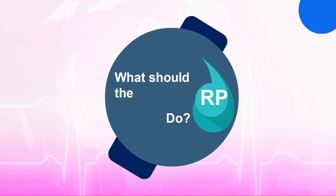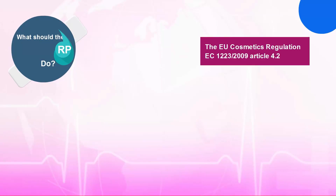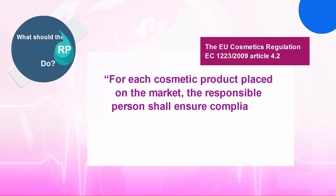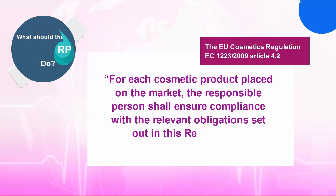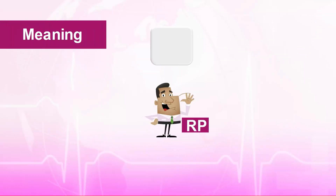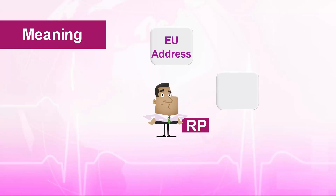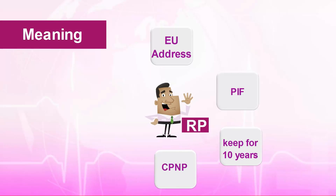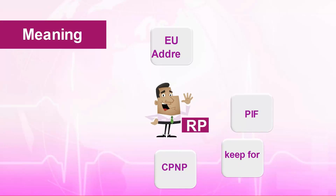What should the RP do? The EU Cosmetics Regulation, EC Article 4.2 states that for each cosmetic product placed on the market, the responsible person shall ensure compliance with the relevant obligations. This means: (1) Provide the manufacturer a registered address in the EU to be mentioned on the product packaging. (2) Compile and check the product information file to ensure compliance. (3) Keep the product information file at their registered EU address, available for inspection by EU authorities for a period of 10 years. (4) Complete product notification on behalf of the manufacturer to the cosmetics products notification portal.